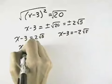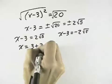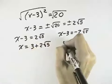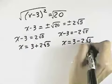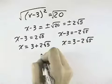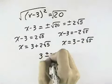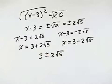Solving for x, we add 3 to get 3 plus 2 times the square root of 5 for the first equation. Adding 3 here, we get x equals 3 minus 2 times the square root of 5 for our second equation, or that can be expressed as 3 plus or minus 2 times the square root of 5.